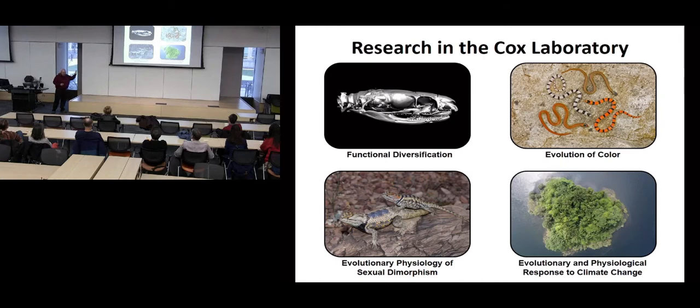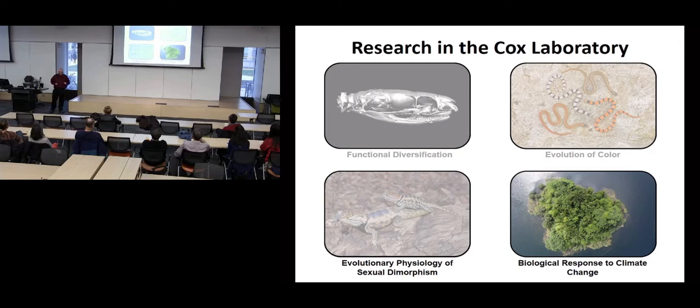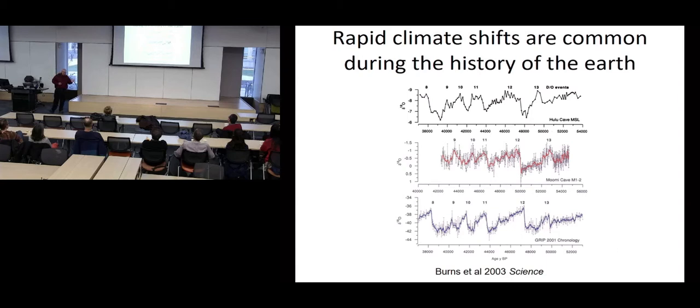What I'm going to be talking about today is my work on the evolutionary and physiological response to climate change — the biological response to climate change. We're interested in this because climate change is happening right now, but also because we think rapid climatic shifts have happened throughout Earth's history. One good example are so-called Dansgaard-Oeschger events — apparently globally synchronous rapid shifts in temperature that have occurred over the past 100,000 years or so.